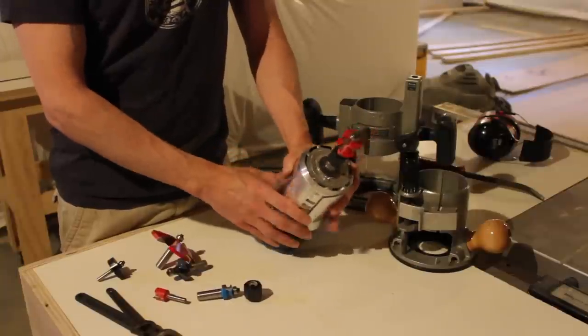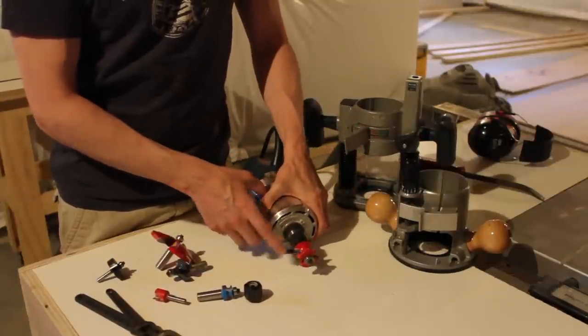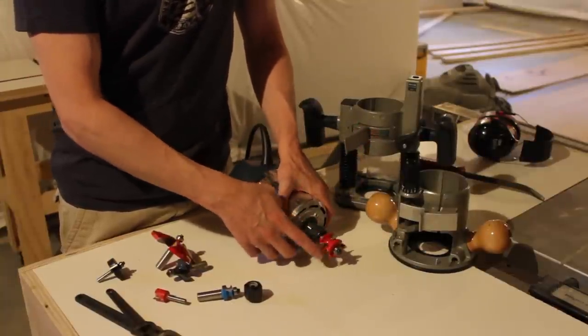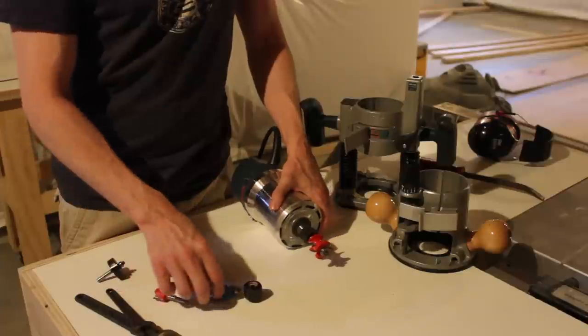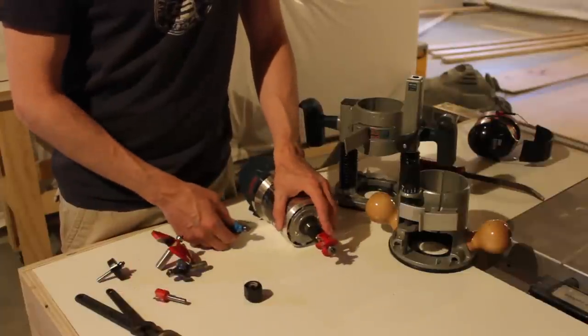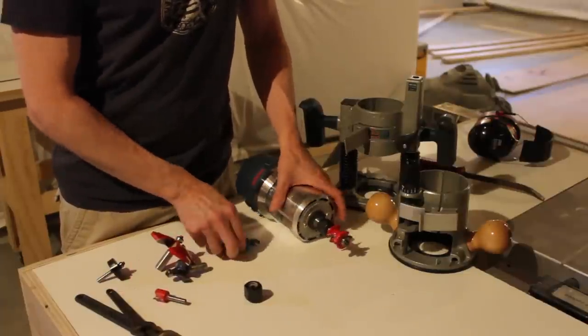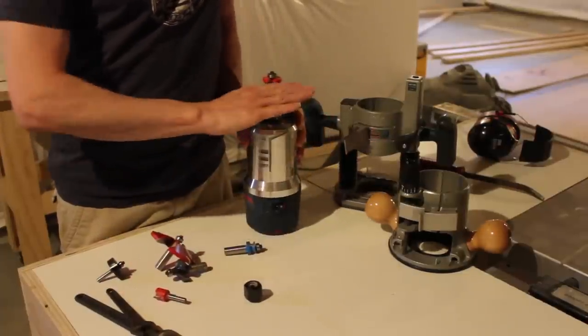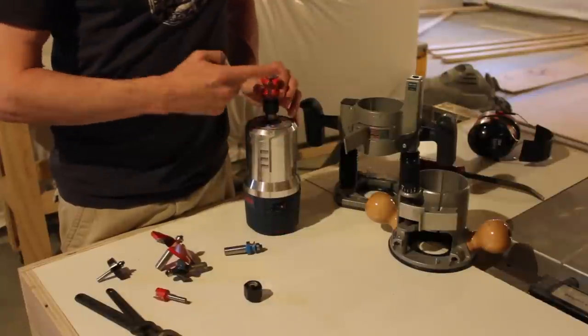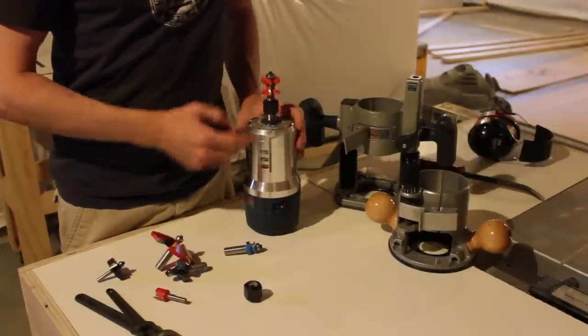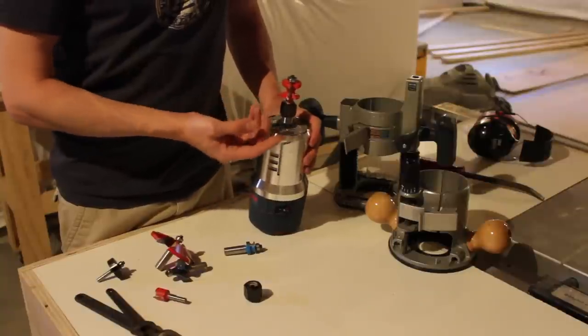That's the basics of the router housing, the power, and router bit changeouts. All the bits for routers cut out a profile. This is a windowsill bit. So as you run the board across it through these teeth, it puts this profile on it, which you would use on a windowsill.